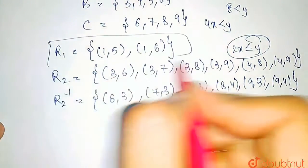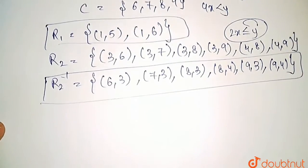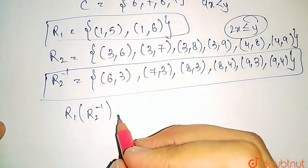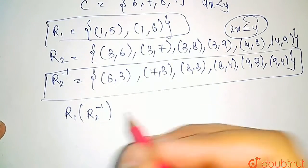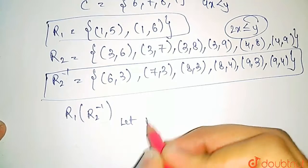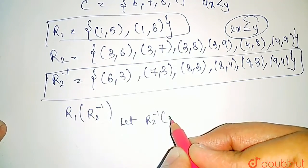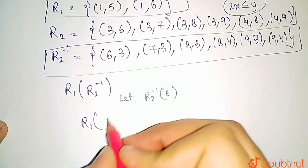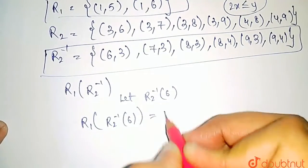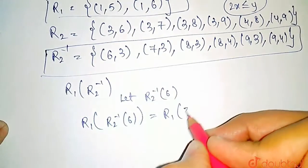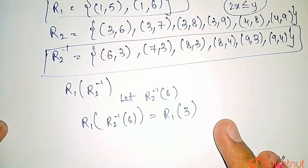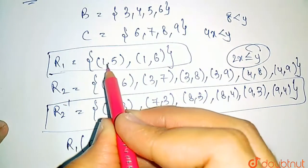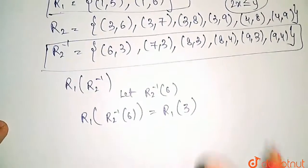Now we know both R1 and R2 inverse. Now we need to find R1 ∘ R2 inverse. So first of all, let us take a particular value. Let us take R2 inverse as a function of 6. So if we calculate R1 of R2 inverse of 6, that would be equal to R1 of 3. But there is no input like 3 in R1. R1 has only one input, that is 1 itself. So this is not possible.